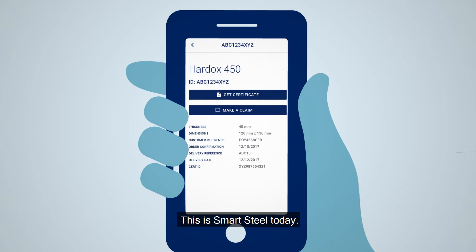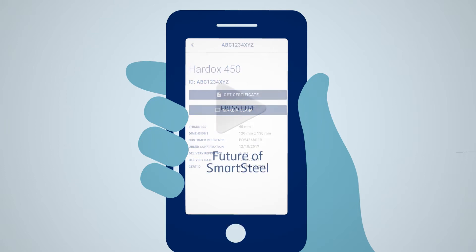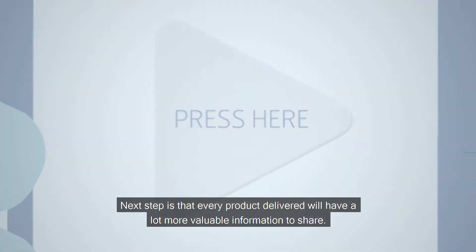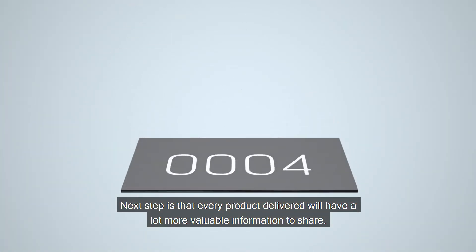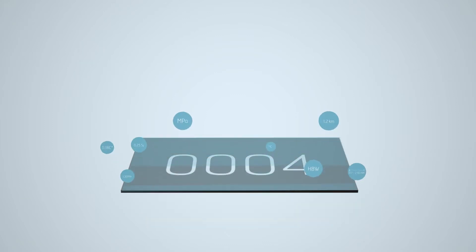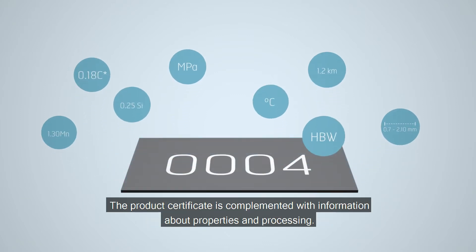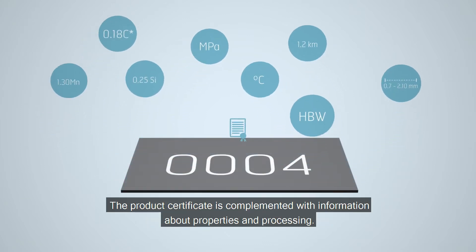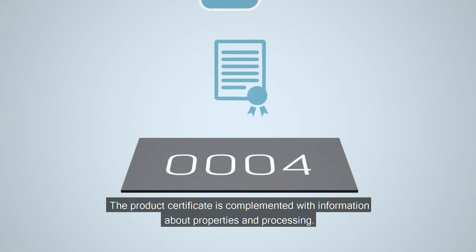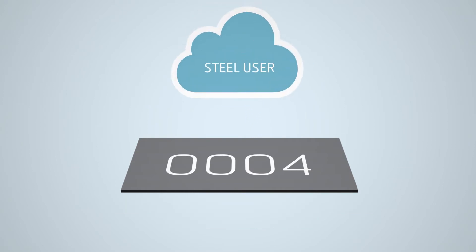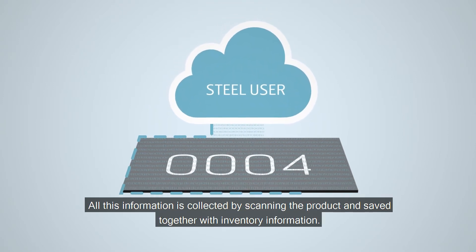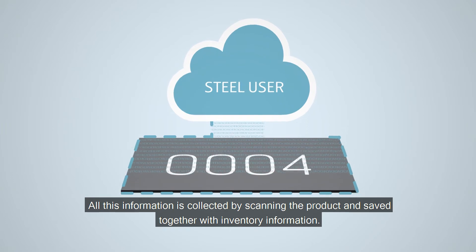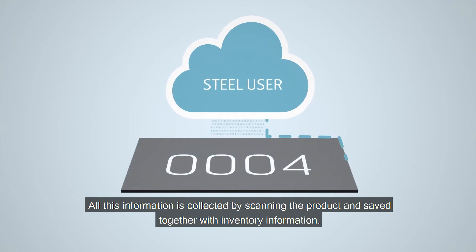This is SmartSteel today. Next step is that every product delivered will have a lot more valuable information to share. The product certificate is complemented with information about properties and processing. All this information is collected by scanning the product and saved together with inventory information.